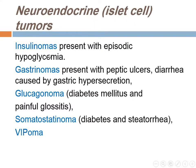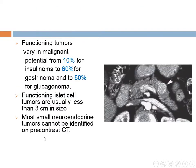Islet cell tumors: we have many types — insulinoma, gastrinoma, glucagonoma, somatostatinoma, VIPoma. They are either functioning or non-functioning. Functioning tumors have malignant potential ranging from 10% for insulinoma, 60% for gastrinoma, and 80% for glucagonoma. They are small, less than 3 cm, and difficult to identify on pre-contrast study.